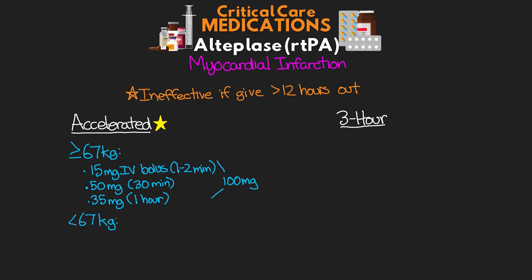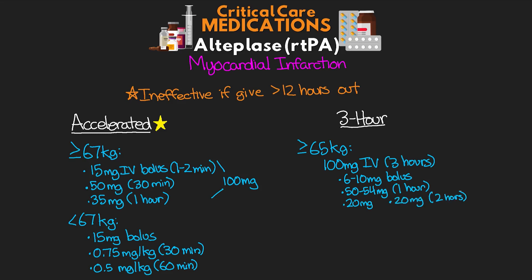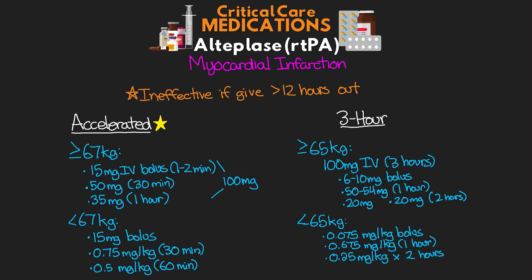If the patient weighs less than 67 kg with the accelerated infusion, still start with a 15 mg bolus, then give 0.75 mg/kg over 30 minutes, then 0.5 mg/kg over 60 minutes. For the three-hour infusion, if the patient weighs 65 kg or more, give 100 mg IV over three hours — typically a 6–10 mg bolus, then 50–54 mg the first hour, then 20 mg for each of the last two hours. If under 65 kg, give a 0.075 mg/kg bolus, then 0.675 mg/kg over the first hour, and 0.25 mg/kg for each of the last two hours.